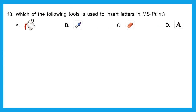Question 13: which of the following tools is used to insert letters in MS Paint? If we have to insert letters, we need alphabetical keys. The options are paint bucket, dropper, rubber, and the text tool shown with alphabet A. The fourth option is what we use to insert any letter, so our right answer is option D.